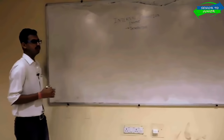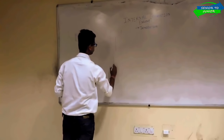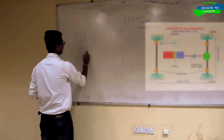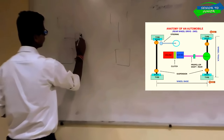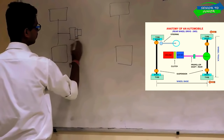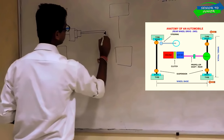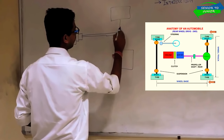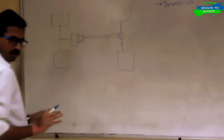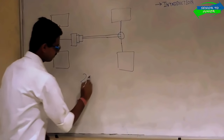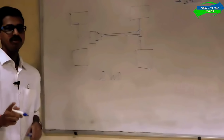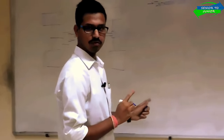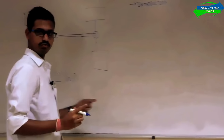Here is an anatomy of a two-wheel drive. This is the wheel — these are the four wheels of an automobile. You have the engine here, this is your clutch, this is your gearbox, this is your propeller shaft, this is your differential, and the power goes to the wheel. So this is actually a two-wheel drive, and there is one more configuration known as four-wheel drive. Let me draw the four-wheel drive and explain the difference between two-wheel and four-wheel drive.